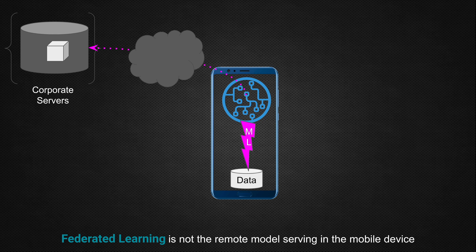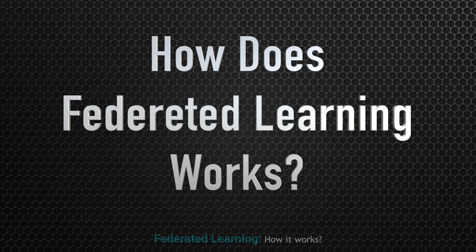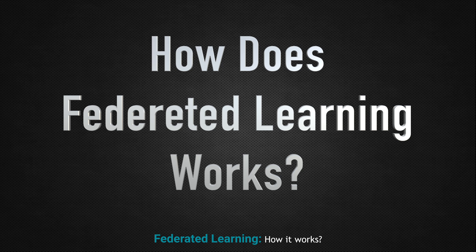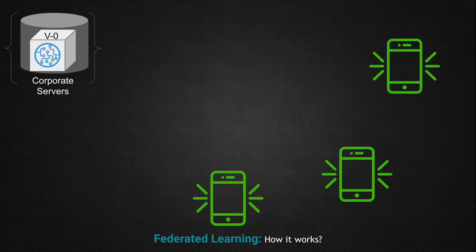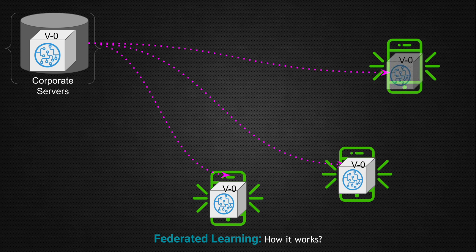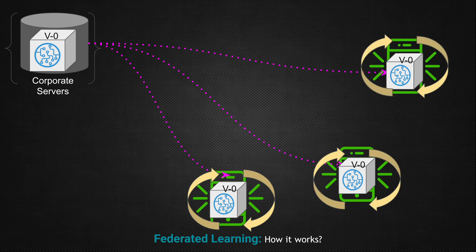Now let's understand how federated learning actually works. For any enterprise performing federated learning, they need a first version of their machine learning model to be deployed to all connected devices scattered across the globe. Once the base model is deployed, the next step is for the model at each device to learn from the data available on that individual device, based on the various activities happening there. One key insight becomes very clear: we are not moving the data in this process — instead, we are moving the model.